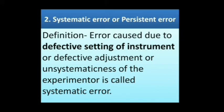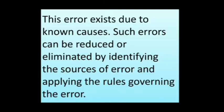The second type is Systematic error or persistent error. Error caused due to defective setting of instrument, defective adjustment, or unsystematic behavior of the experimenter is called a systematic error. This error exists due to known causes, and such errors can be reduced or eliminated by identifying the sources of error and applying the rules governing the error.